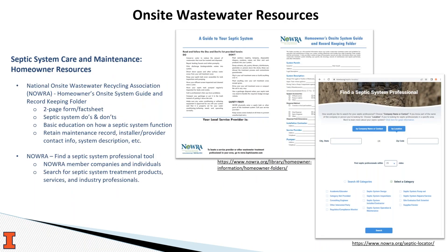First, we'll look at homeowner resources from NARA, the National Onsite Wastewater Recycling Association. NARA is the largest organization in the US dedicated to educating on-site professionals and providing public service to homeowners. One of their missions is to provide better public awareness of the environmental, economic, and public health benefits of on-site systems. They host various publicly available resources targeted for homeowners, including the Homeowner's On-site System Guide — a two-page fact sheet that NARA developed to help homeowners keep track of important information like permits, system information, maintenance records, and installer contact information.